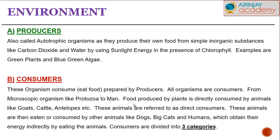Consumers, on the other hand, are those that eat food that has been prepared by the producers. Animals like goats, cows, deer, and even humans are all classified as consumers. Food produced by plants is directly consumed by animals, so they are referred to as direct consumers. These animals are then eaten by other animals like big cats and humans, which obtain their energy indirectly by eating the animals.